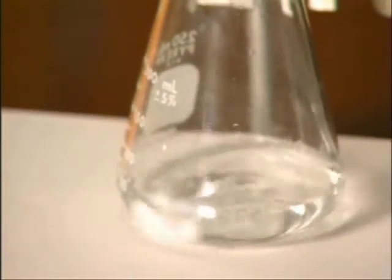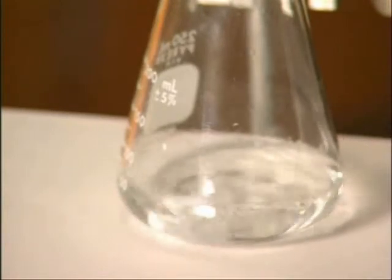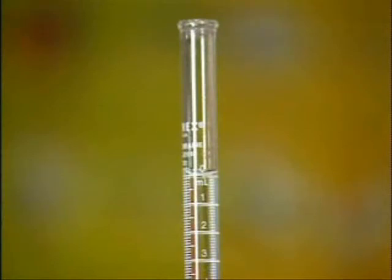Two drops of indicator dye are added to the acidic solution. This indicator dye is clear in acidic solution and pink in basic solution. The burette is filled with a sodium hydroxide solution of known strength and an initial reading is taken.